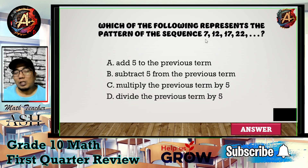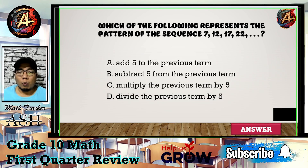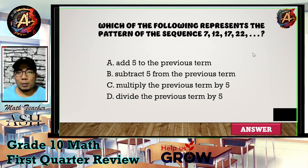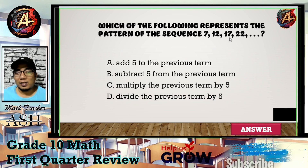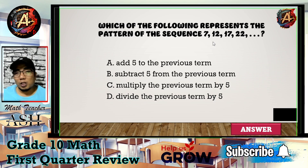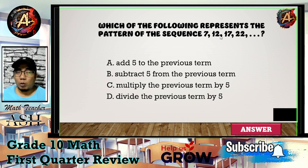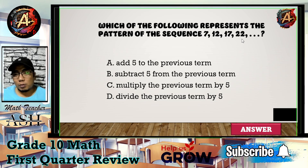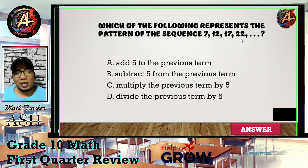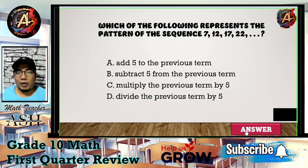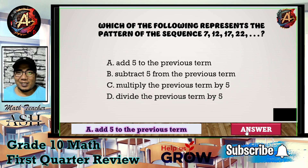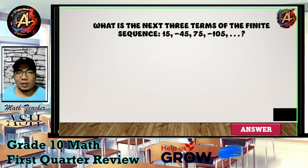This question is very easy because we just check the number pattern. We have 7, 12, 17, 22 — it is obviously increasing by 5: 7 becomes 12 (added 5), 12 becomes 17 (added 5), 17 becomes 22 (added 5). Therefore the correct answer is letter A.